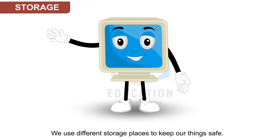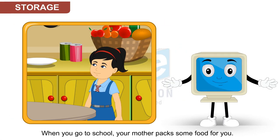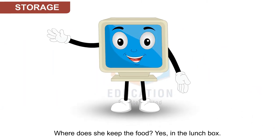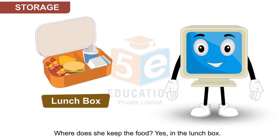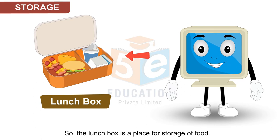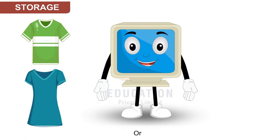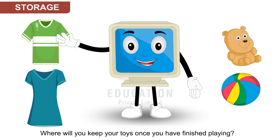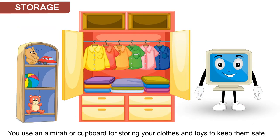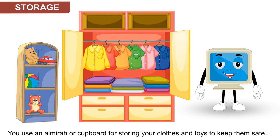We use different storage places to keep our things safe. When you go to school, your mother packs some food for you. Where does she keep the food? Yes, in the lunch box. So the lunch box is a place for storage of food. When you want to keep your clothes or your toys once you have finished playing, you use an almira or cupboard for storing your clothes and toys to keep them safe.